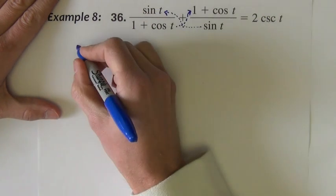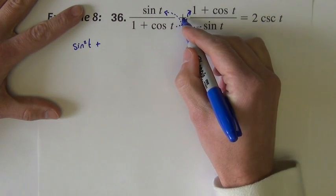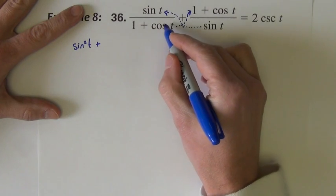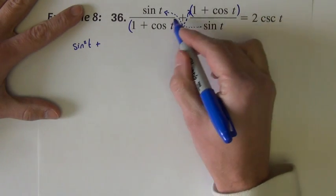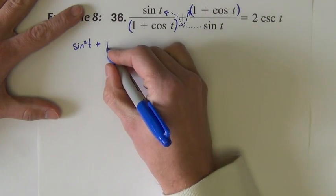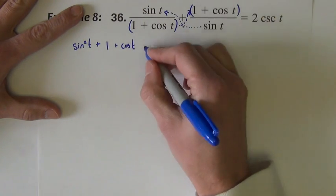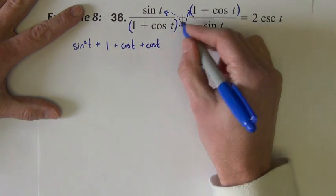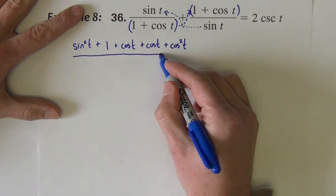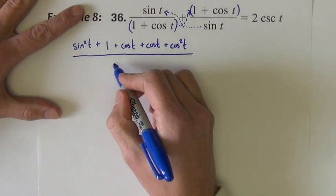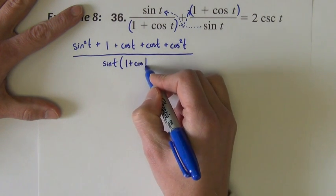So I've got sine t times sine t, that is sine squared t, plus here's the plus between the fractions. Now I want 1 plus cosine times 1 plus cosine. So I'm going to do it without rewriting it, but I'm going to do this like a FOIL problem. 1 times 1 is 1, 1 times cosine is cosine, cosine times 1 is another cosine, cosine times cosine is cosine squared, divided by, for the time being I'm going to leave it as just sine t times 1 plus cosine t.